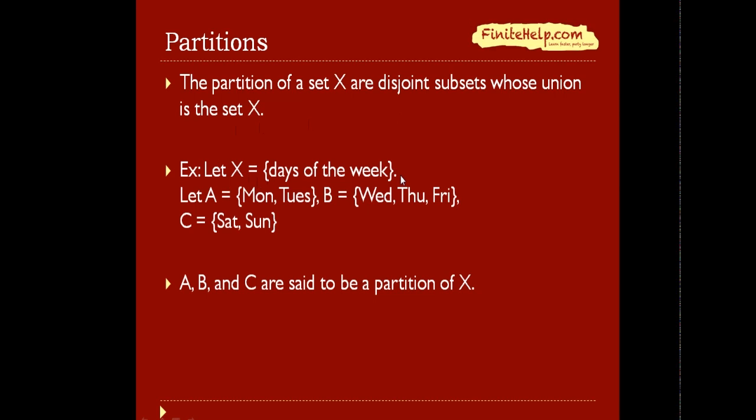So let set X be the days of the week. And here we have set A, which is Monday and Tuesday, set B, Wednesday, Thursday, and Friday, and set C, Saturday and Sunday. So first thing, notice these sets are disjoint because there are no common elements between them.